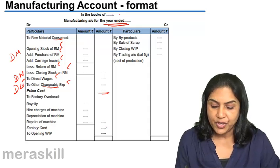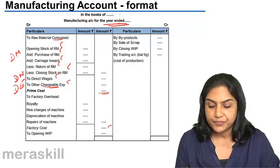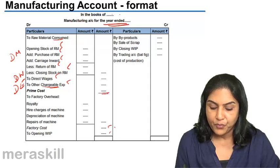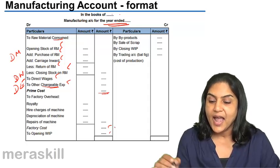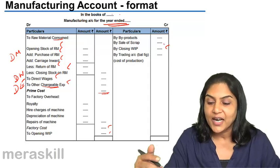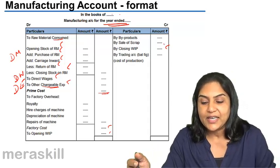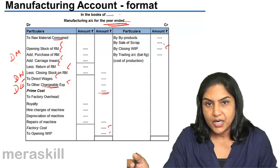These add up to give us the factory cost, to which opening work in progress is added and closing work in progress is deducted or shown on the credit side of the manufacturing account.